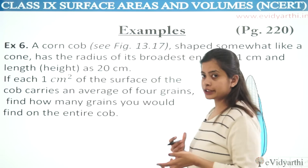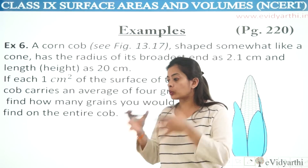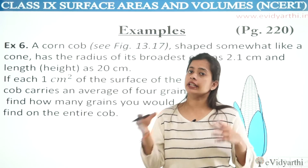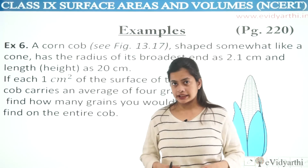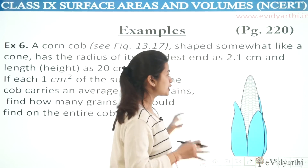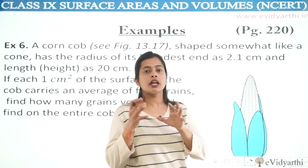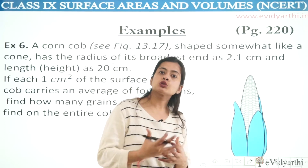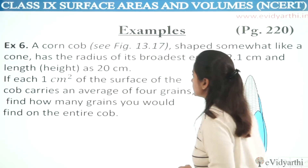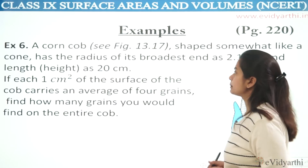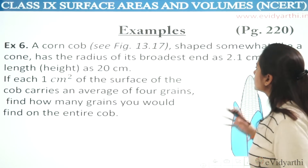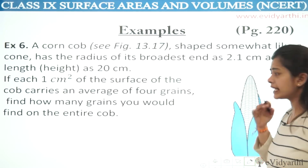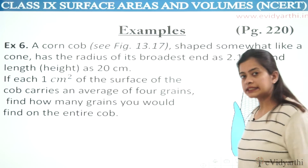First of all, you have seen what kind of system — total surface area, curved surface area, base circle. Based on that, we have seen examples. Now look here at the application part. If there is any product or device, how do we manipulate it? How do we understand the figure? A corn cob in the figure, shaped somewhat like a cone, has the radius of its broadest end as 2.1 cm.